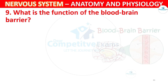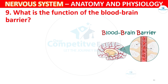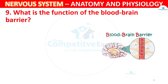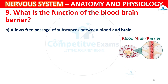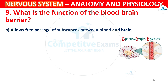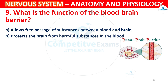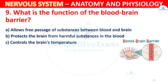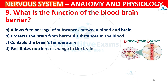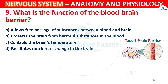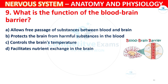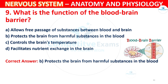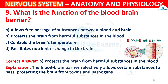Question 9: What is the function of the blood-brain barrier? Options: A) Allows free passage of substances between blood and brain, B) Protects the brain from harmful substances in the blood, C) Controls the brain's temperature, D) Facilitates nutrient exchange in the brain. The correct answer is B. The blood-brain barrier selectively allows certain substances to pass, protecting the brain from harmful substances.